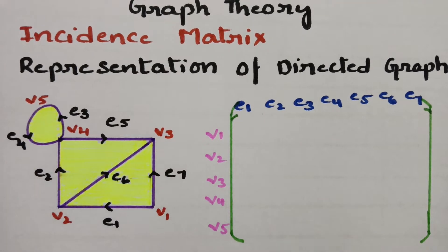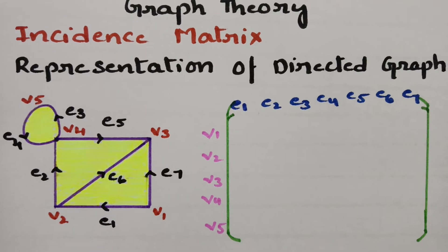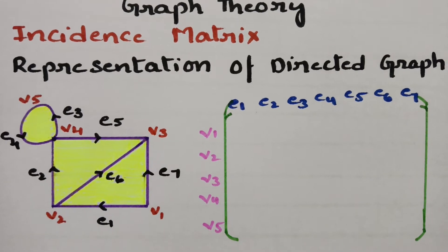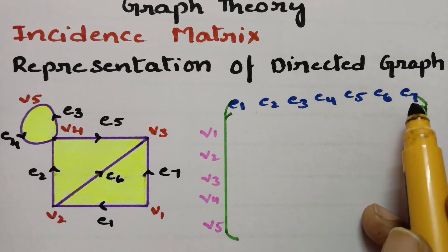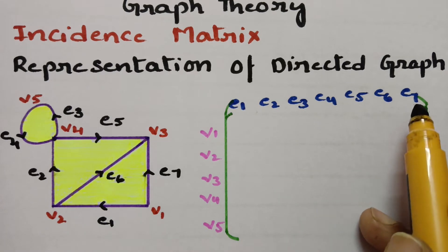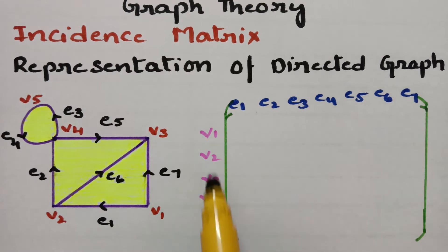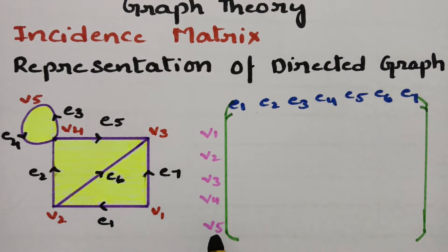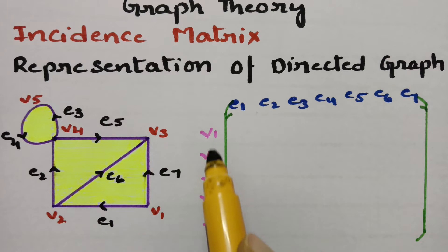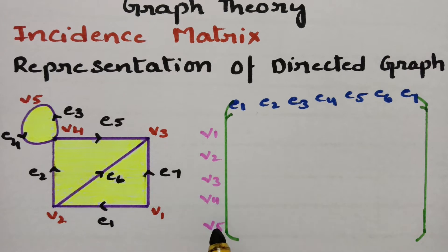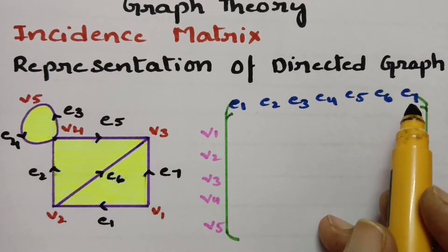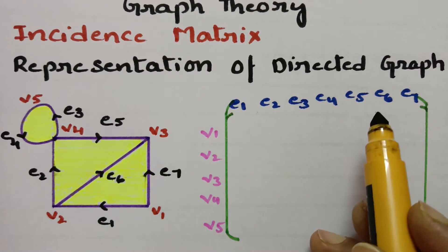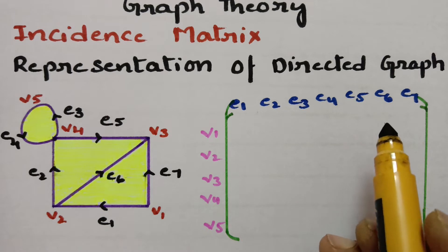We have to represent the incidence matrix. For representing the incidence matrix, all the edges should be on the top as columns, and the vertices v1, v2, v3, v4, v5 are the rows.